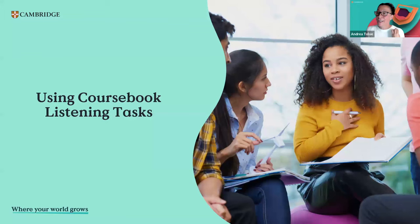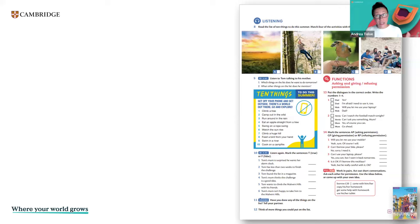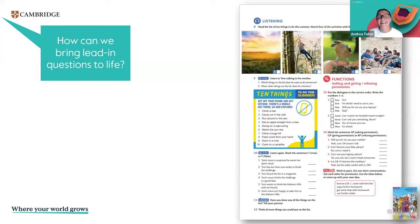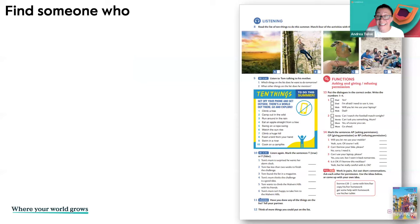Those are two ideas for how we can extend and adapt speaking tasks. Now let's look at using coursebook listening tasks. This is from a general English course called Think, at A2 level, and this lesson focuses on course listening. My question is: how can we bring lead-in questions to life? When we're going to do a listening with our students, we have to lead in to the topic. In this listening task, it focuses on summer activities — what students do in the summer holidays.